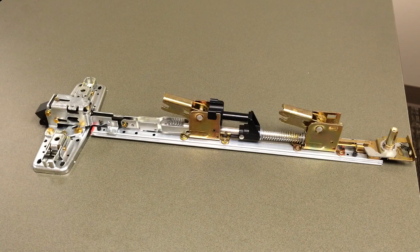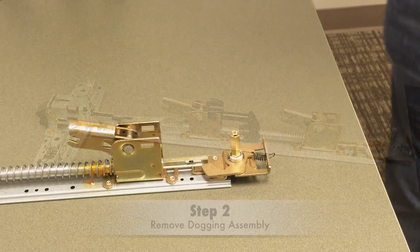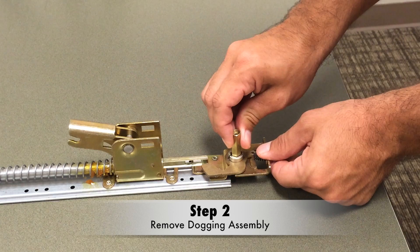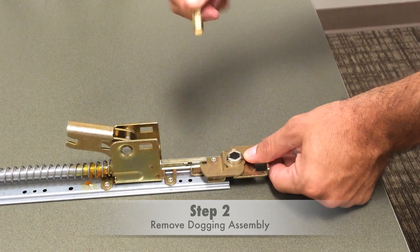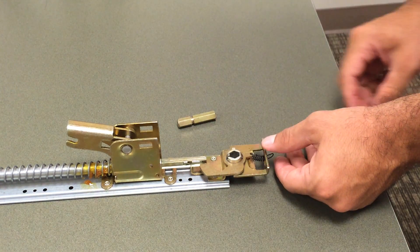Now we're down to our base plate. We can leave the head attached and go ahead to the dogging. We're going to remove the first two pieces of the dogging so they're out of the way when we remove the rivets.